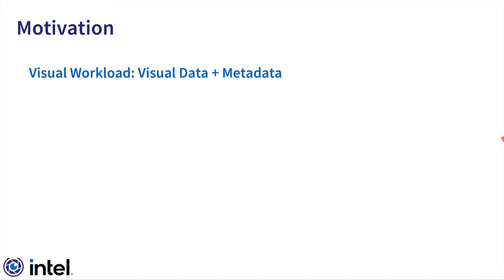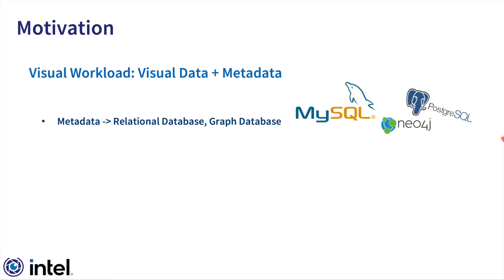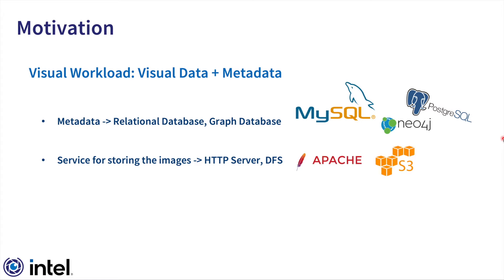The Visual Data Management System is essentially a database that treats visual entities like images or videos as first-class citizens, and the motivation for this work was when we started working on applications that heavily rely on visual data. We realized that we had to store metadata somewhere, like in a relational or graph database, any of the off-the-shelf solutions, but we had to rely on a different system to store the actual images — either an HTTP server, a distributed file system, or even an object store like S3 — and we had to use a set of libraries to run basic and typical pre-processing operations on the images.